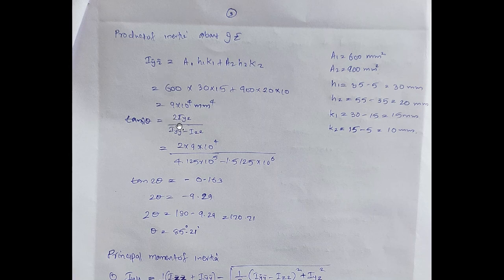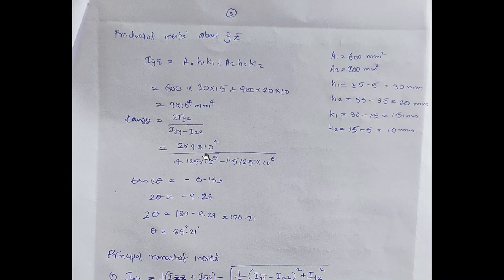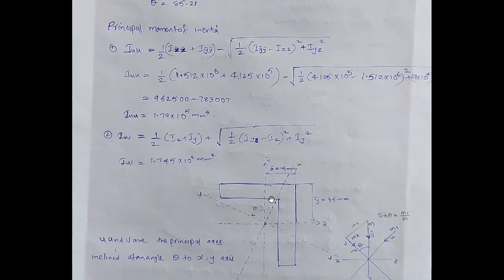Using tan 2θ = 2·Iyz / (Iy − Iz). Substituting: 2 × (9 × 10⁴) / (4.125 × 10⁵ − 1.5125 × 10⁶). So tan 2θ = −9.29. Therefore 2θ = 180 − 9.29 degrees, giving theta = 85.21 degrees. The principal axis is inclined at 85.21 degrees with respect to the centroidal axis.